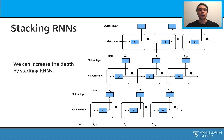So we have seen how a simple recurrent neural network works. We can also create some different versions. For example, we can increase the depth of our neural network by stacking different RNNs.